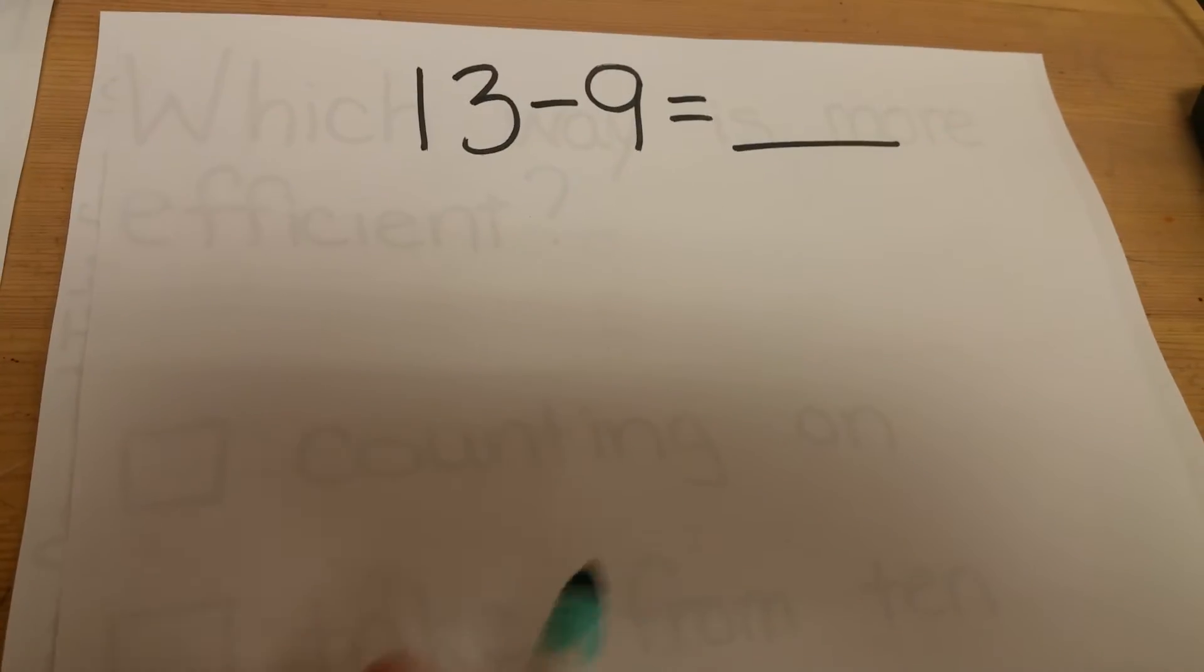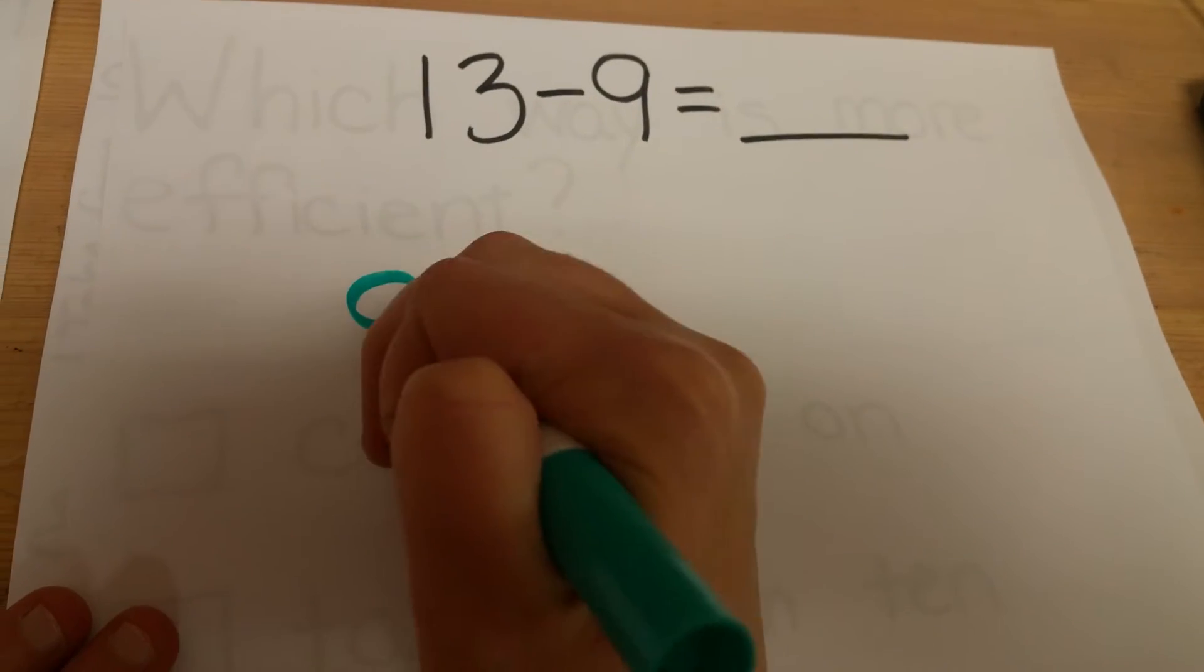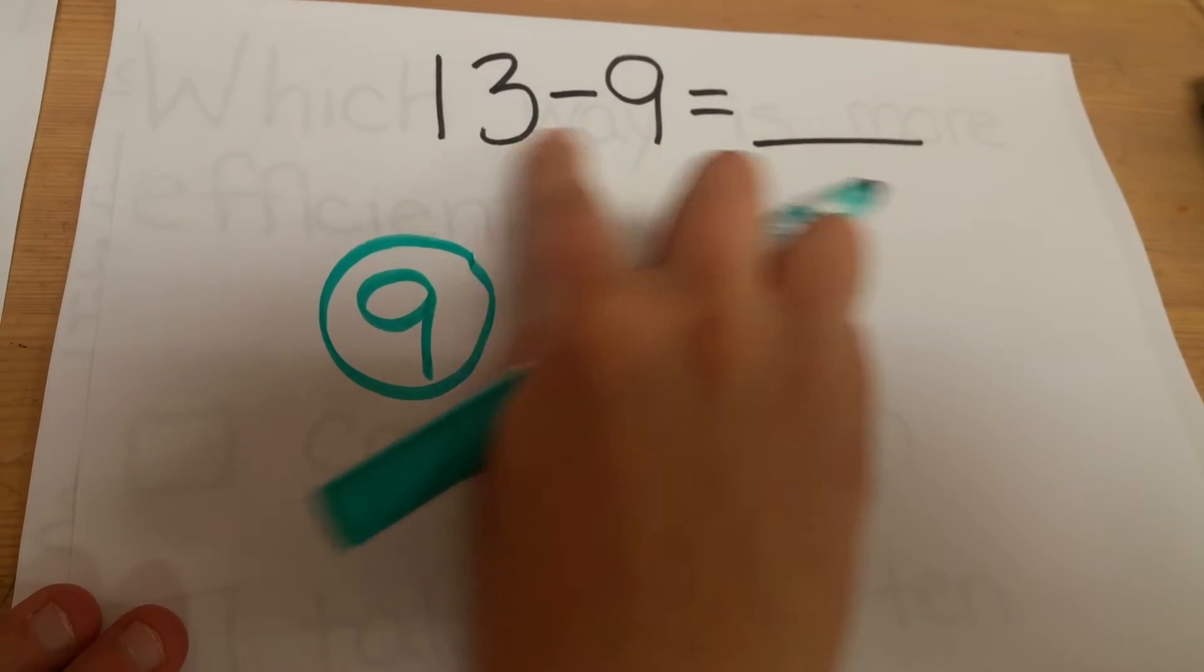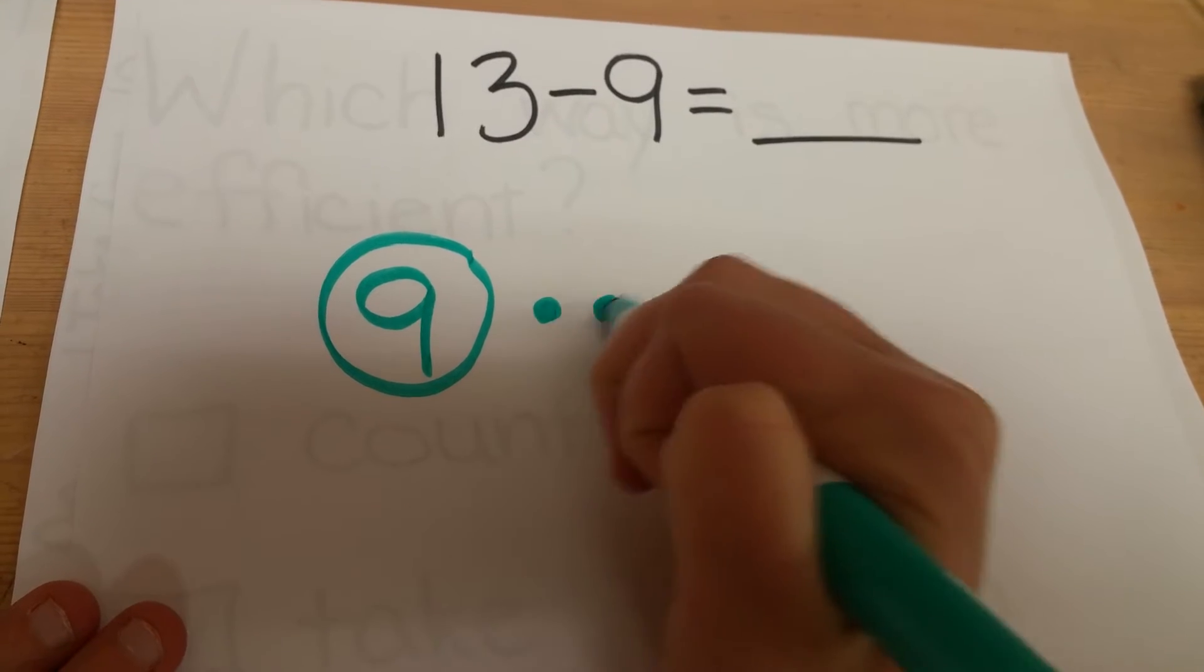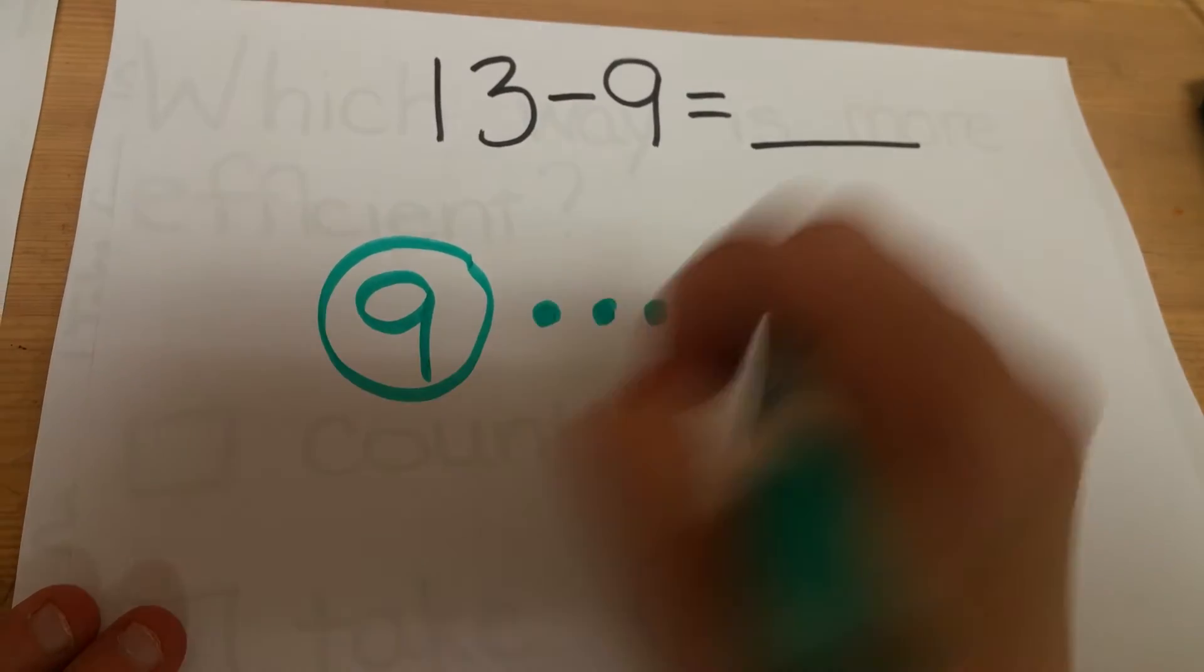Do it one more time so you can see. 13 minus 9. Again starting with the smaller number: 9 and counting up. 10, 11, 12, 13. The answer is 4.